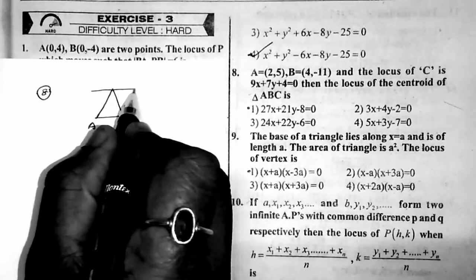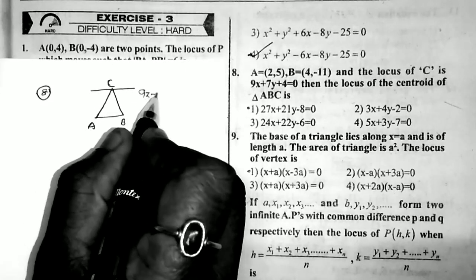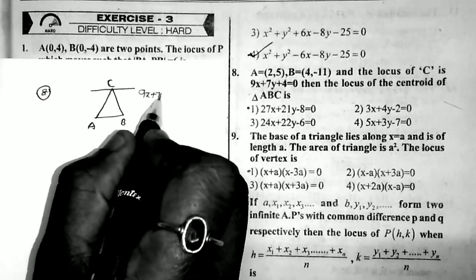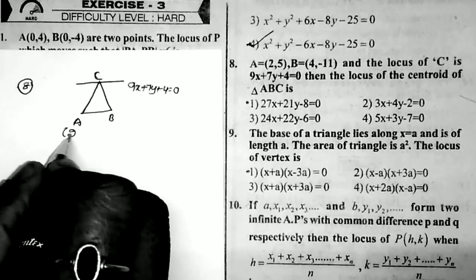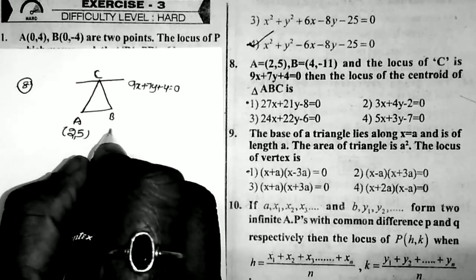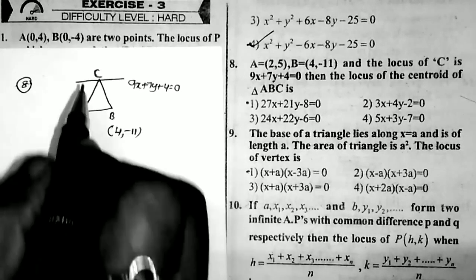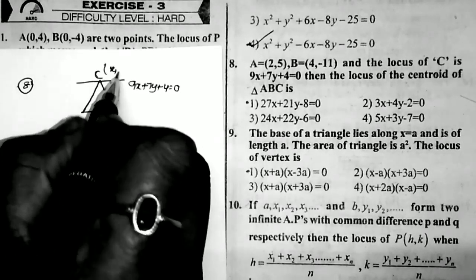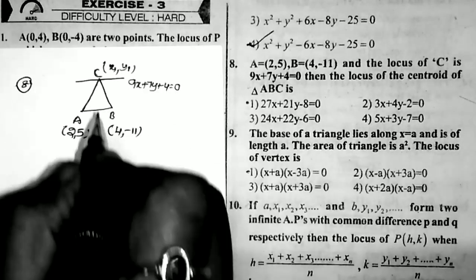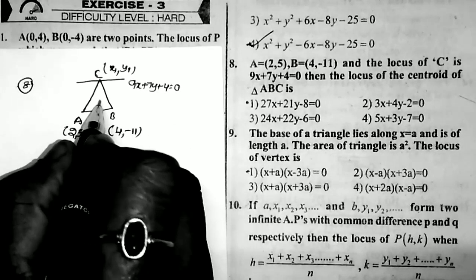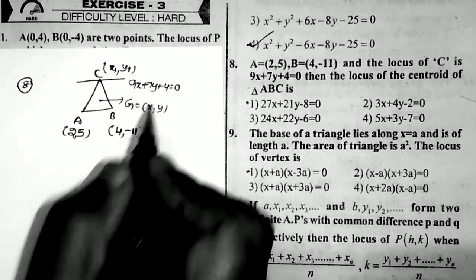The locus of C is given as 9x + 7y + 4 = 0. The points are A = (2, 5) and B = (4, -11). I take C = (x₁, y₁). Since the question asks for the locus of the centroid, I take G = (x, y).